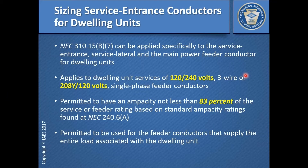When it comes to service entrance conductors and sizing of service entrance conductors, the main rule we're going to use for a dwelling unit is 310.15(B)(7). Keep in mind that this is based on the 2017 NEC — this is going to change for the 2020 code. For the 2017 code, your main requirement would be found at 310.15(B)(7).